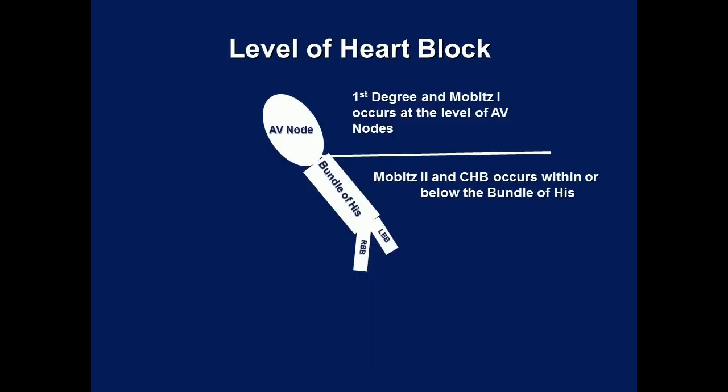Levels of heart block: First degree heart block and Mobitz I occur at the level of the atrioventricular node. Mobitz II and complete heart block occur within or at below the bundle of His.